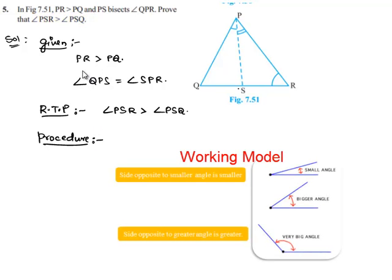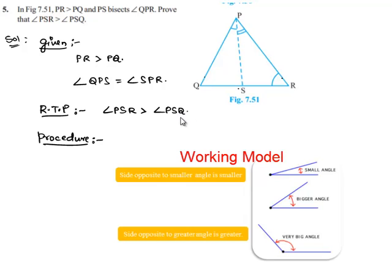By utilizing the given relation that PR is greater than PQ, and by applying the concept that the angle opposite to the smallest side will be smaller and the angle opposite to the greatest side will be greater, we can get a relation between angle Q and angle R. Thereby, considering triangles PSQ and PSR and establishing the relation between angles, we can prove that angle PSR is greater than angle PSQ.